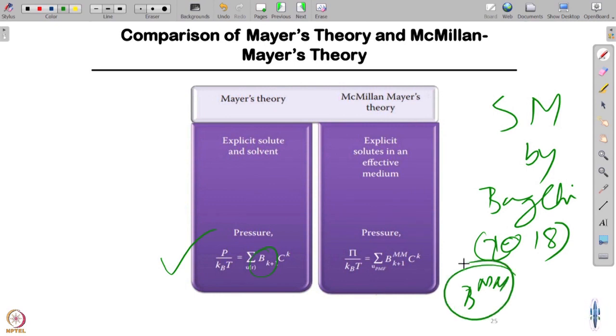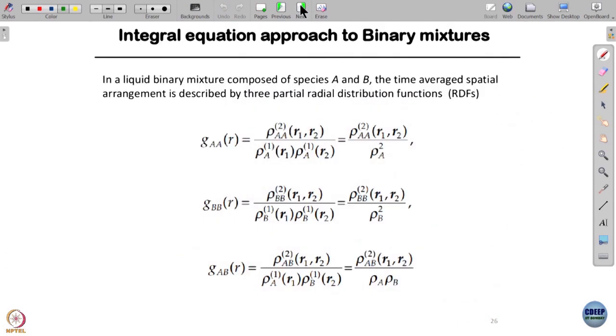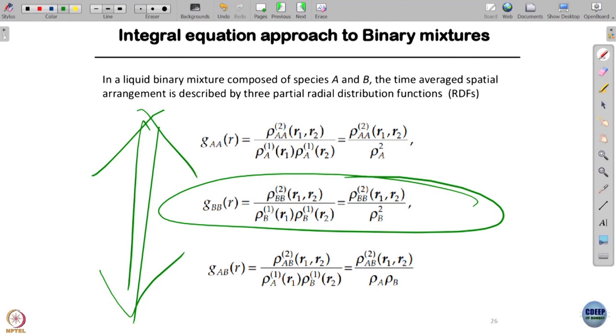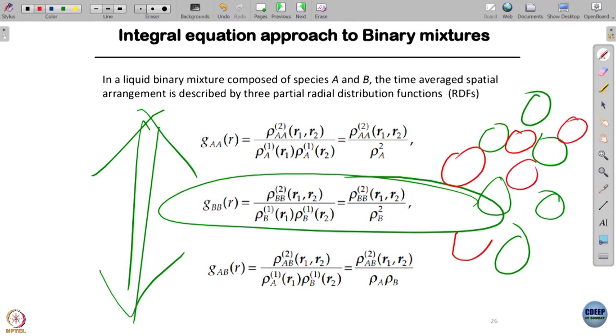What McMillan and Mayer did was derive an expression for B_MM, and it's exactly the same thing. It can be explained - virial coefficient can be expressed in terms of this G_BB. These quantities are the radial distribution functions. They tell you how A and B are arranged.